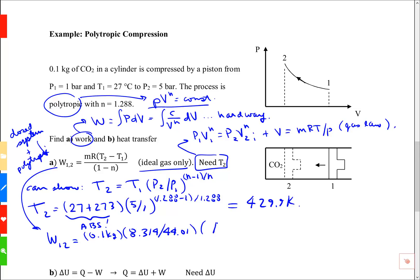Then our temperature is 429.9 for T2, T1 is 300 Kelvin. That's again absolute, 27 plus 273. And all of that divided by 1 minus 1.288.